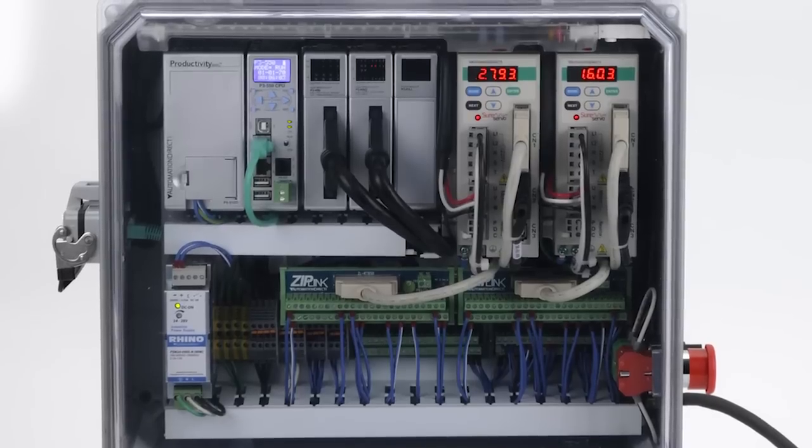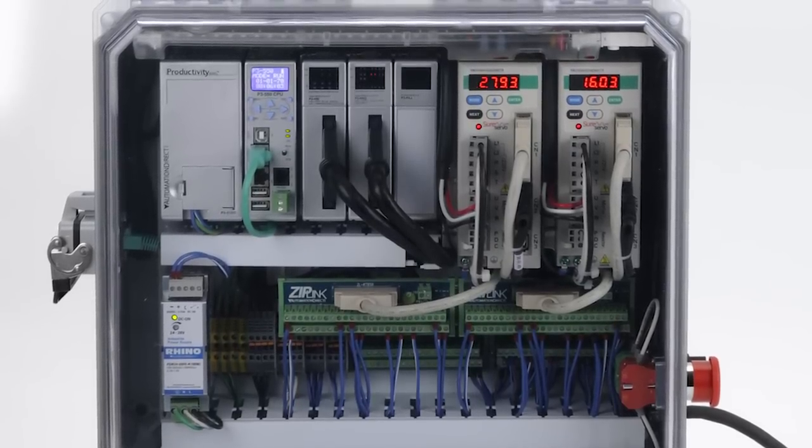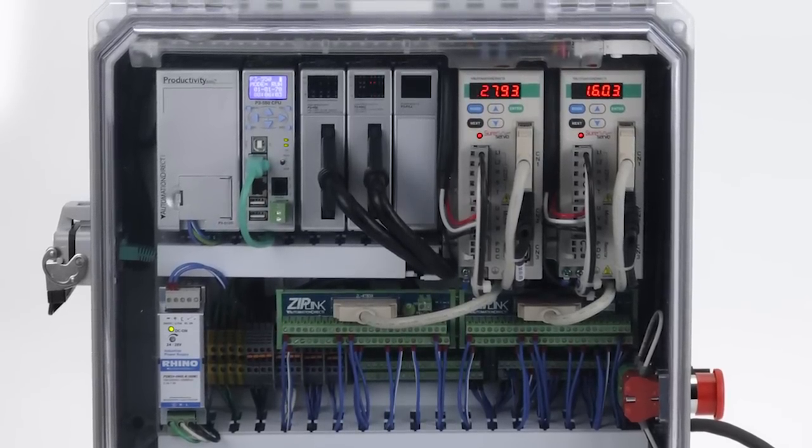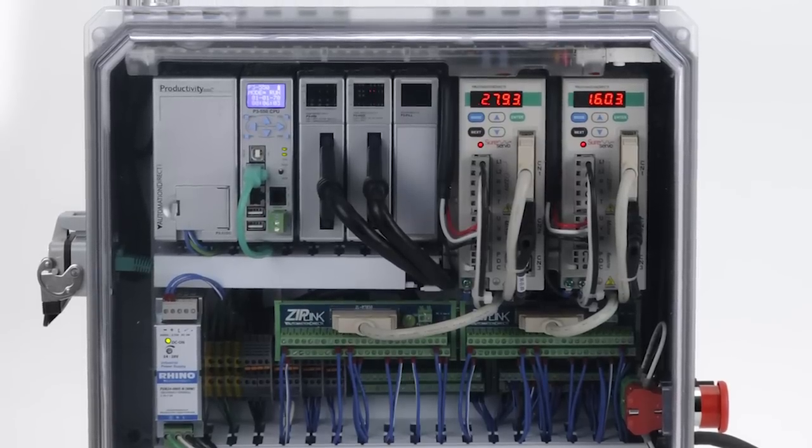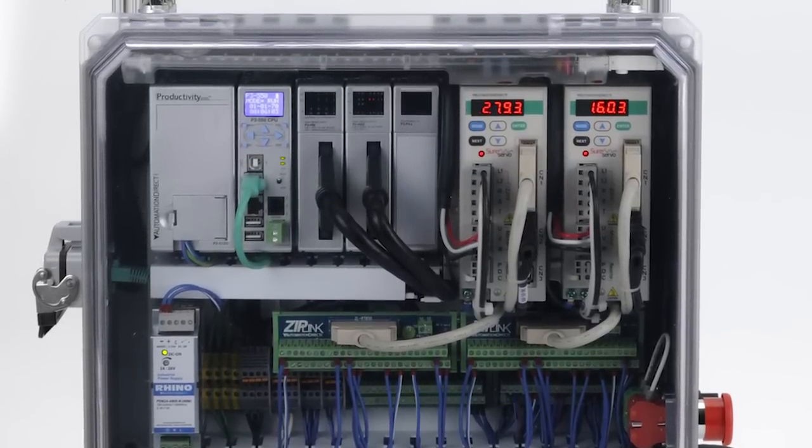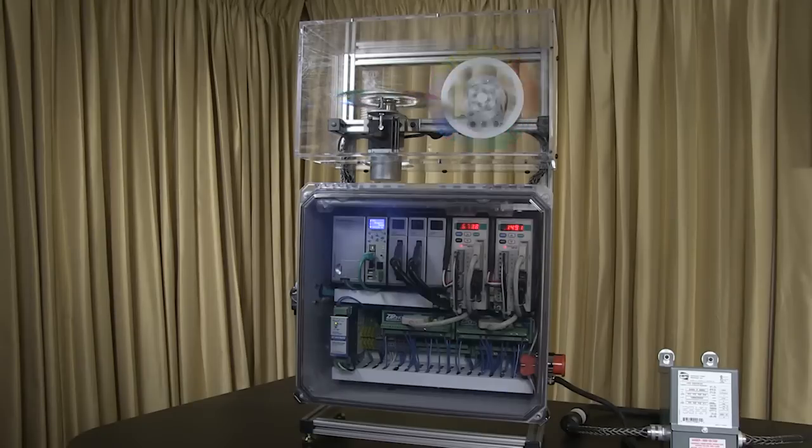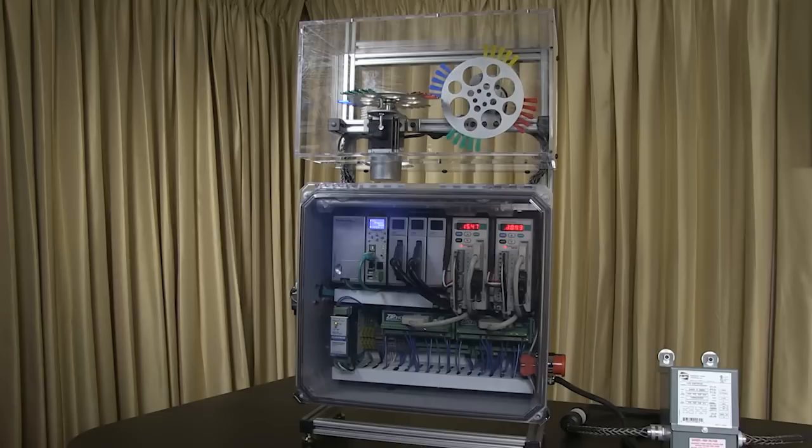Two SureServo servo drives control the 400-watt servo motors, based on the industry-standard pulse and direction commands generated by the high-speed output module in the Productivity 3000. With ziplink cables and feed-through modules connected to the I.O. ports on the servo drives, and ziplink cables and modules also connected to the high-speed module in the pack, the interconnections were a breeze.